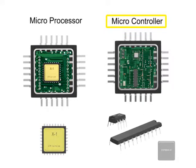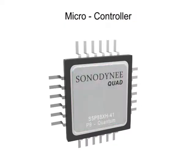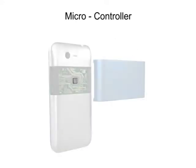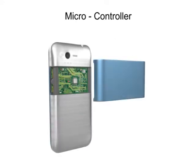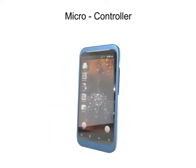In general, microprocessors are used to perform a wide range of computing operations, while a microcontroller, with its all-in-one design, performs specialized tasks required for devices such as a smartphone.